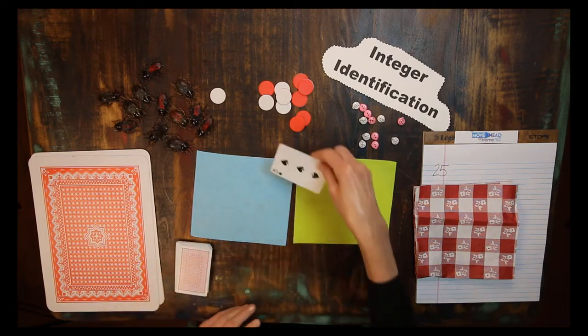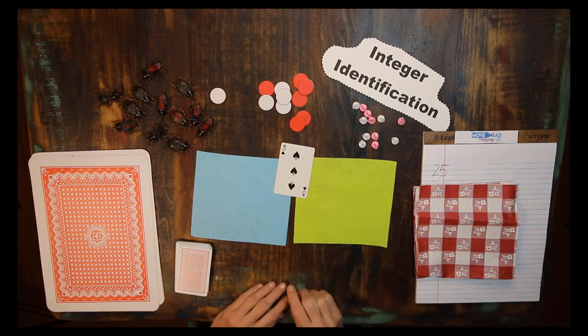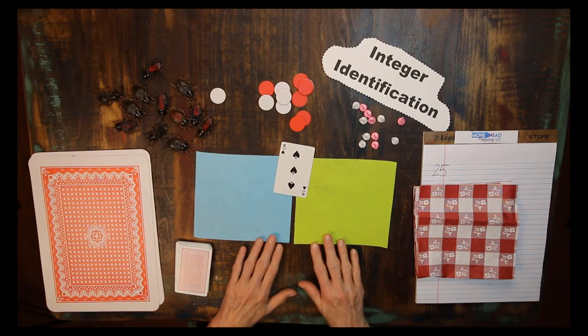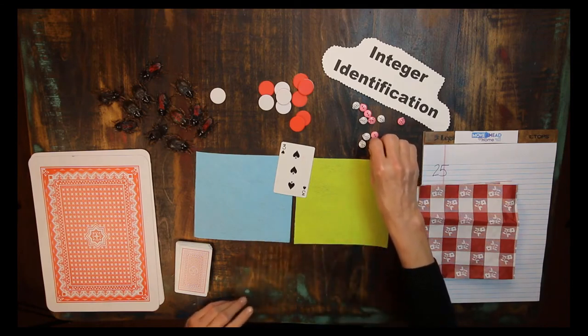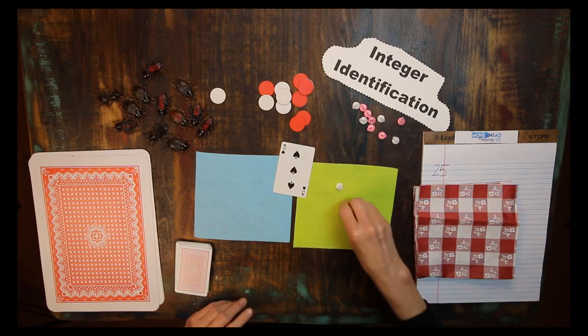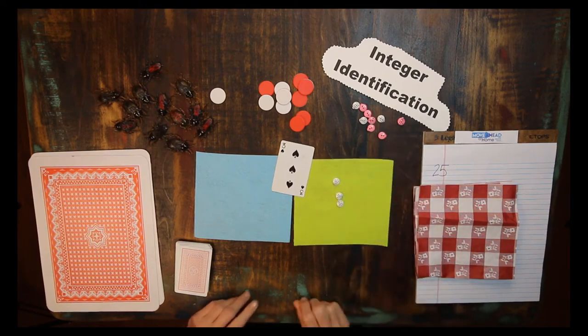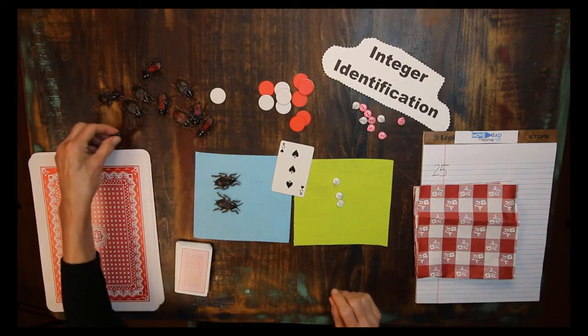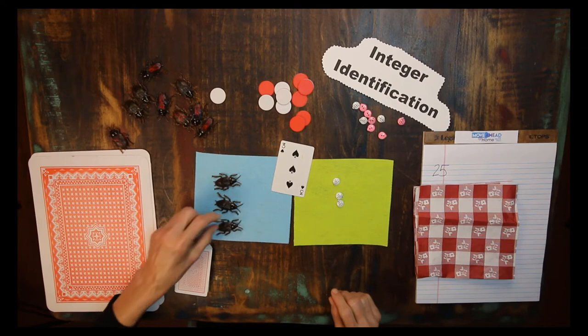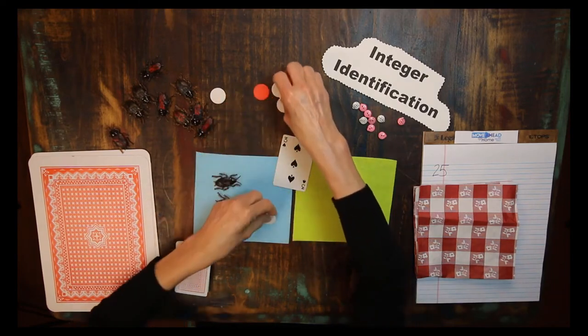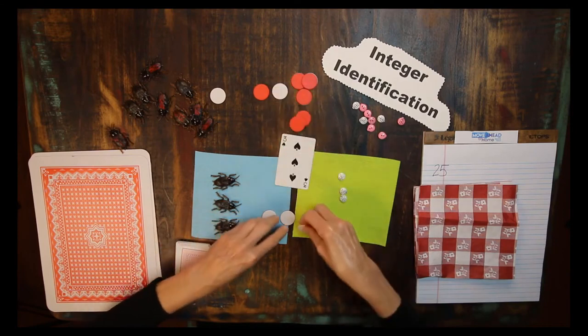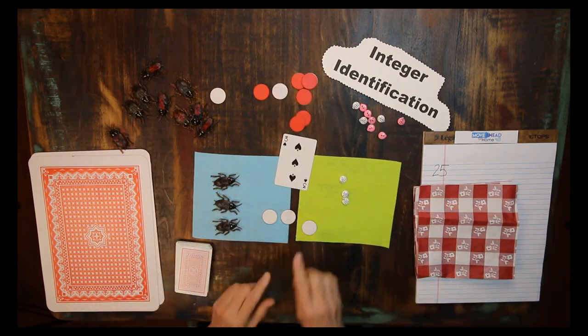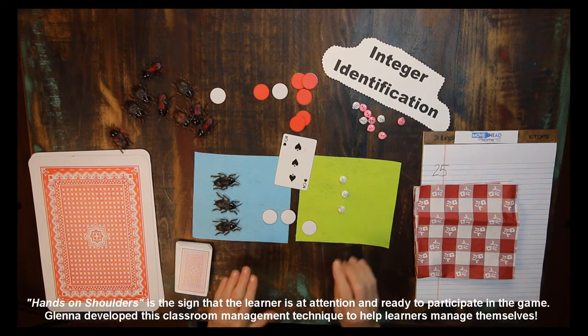Let's take our first one and see. It is three of spades. That is a black number. So it would be a positive three. I would represent that with ladybugs or I could represent it with roaches or I could represent it with something that is lighter color. The first person to represent and then put their hands on their shoulders will win that round.